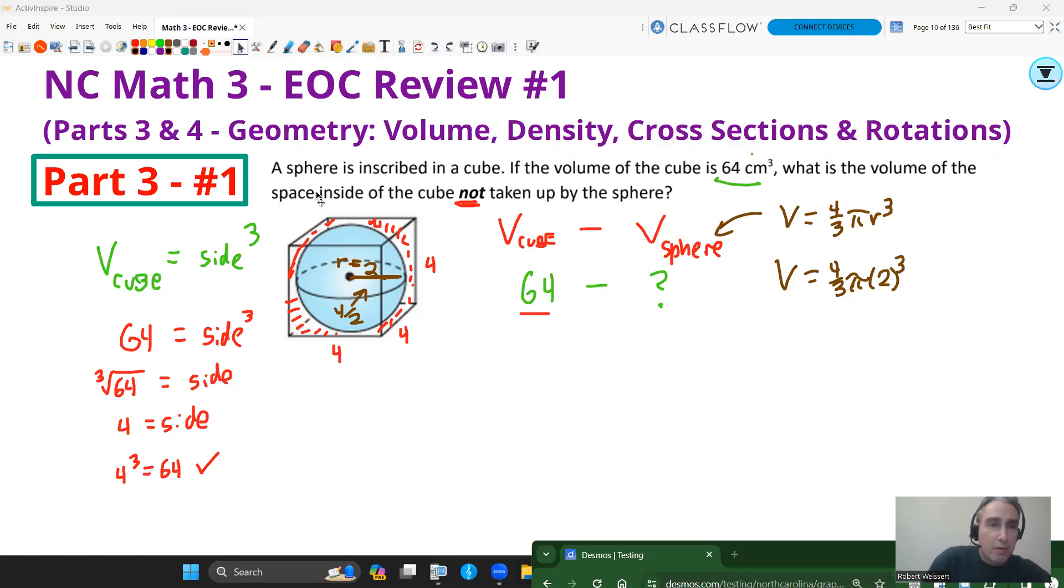So my volume is going to be 33.5 cubic centimeters. And so now I can plug that in here and figure out the volume not taken up by the sphere. So it's going to be 64 minus 33.5, and that's going to give us about 30.5 cubic centimeters.